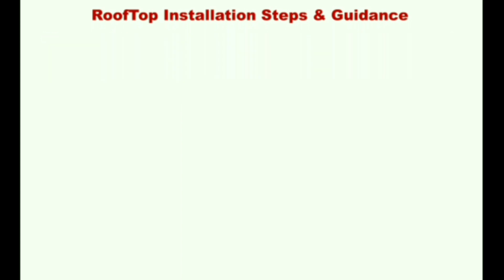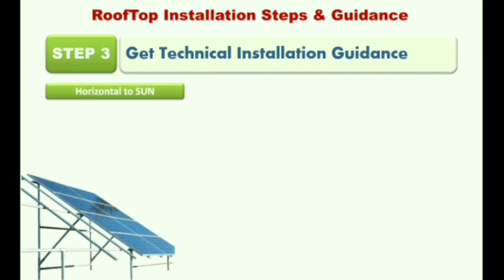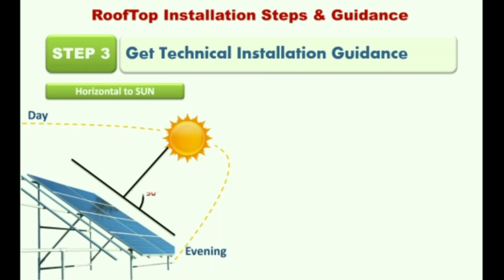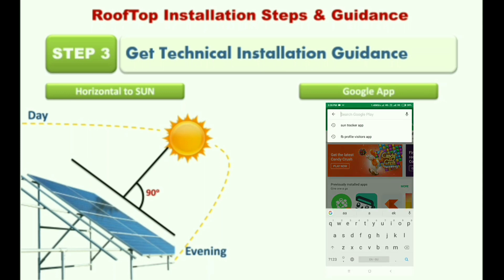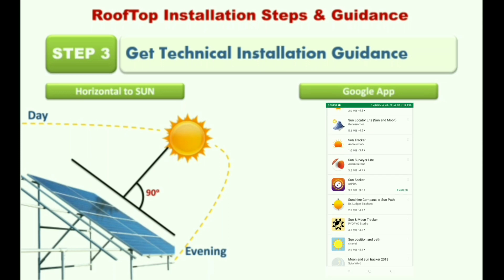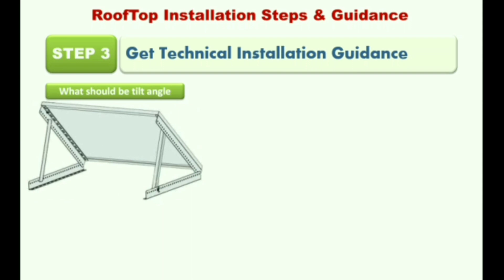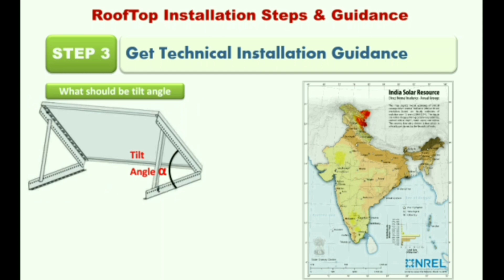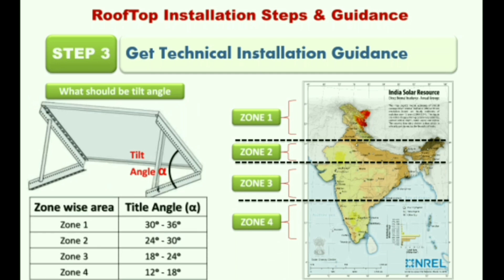Coming to Step 3 — installation guidance. The plant can be installed using manual measurement instruments; the plates should be perfectly horizontal with 90 degrees to the falling sun rays, though this method is not perfect due to variation across different regions. Alternatively, you can use apps from the Play Store to find the solar path and installation angle. An important technical parameter is the tilt angle, which varies by area and region. Zone-wise categories with angles are shown so you can find yours and use these parameters for your tilt angle.